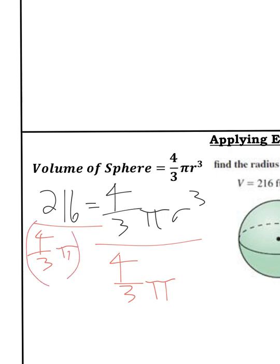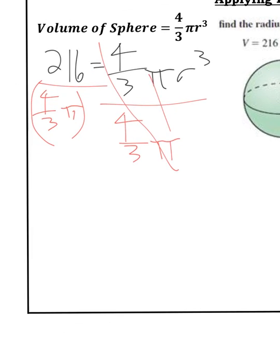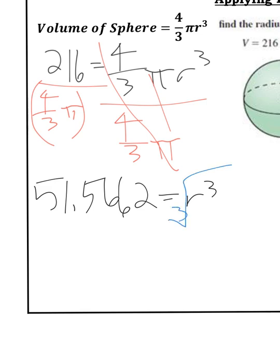Make sure you use parentheses to avoid mistakes with order of operations. When I do that, I get r³ ≈ 51.5662. Since it's r³, I'm going to cube root both sides. I hit the control caret button on my calculator, then cube root that answer, and I get r ≈ 3.722.